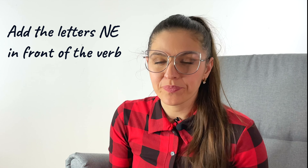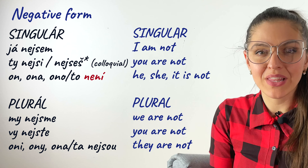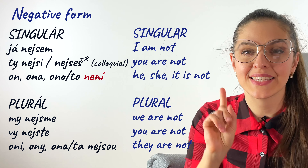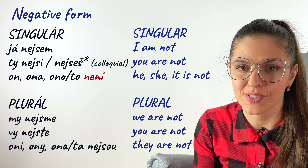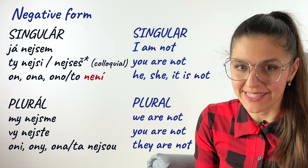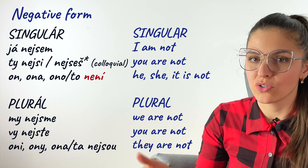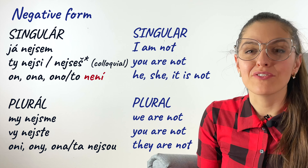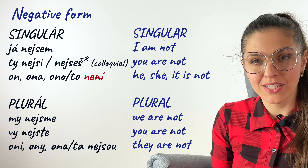And how does sloveso být look in the negative form? If you want to say 'I am not something,' we simply add two letters to the beginning of the verb — nebýt. Negative singular: já nejsem, ty nejsi, nejseš. Careful — the third person singular just changes: on, ona, to — není. Negative plural: my nejsme, vy nejste, oni nejsou.